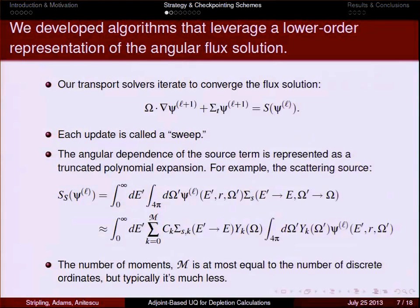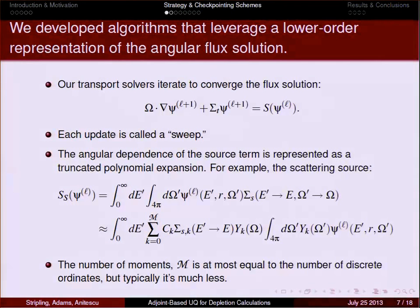I'm going to talk about how we've adapted this to be more efficient. To do that, I need to explain a little about how we solve the transport equation. In a simple form, there's a transport term, a total collision term, and a total source term that depends on the solution psi. We iterate: at each iteration we update the source term, compute a new psi vector, and repeat until convergence. Each iteration is called a sweep. Importantly, it's common in nuclear engineering to represent the angular dependence of the right-hand side in terms of a polynomial expansion, saving coefficients rather than point values in angle. This means we don't have to save as much information about the angular dependence of psi.